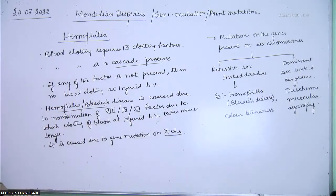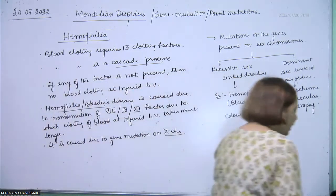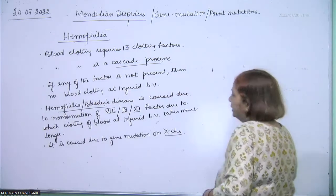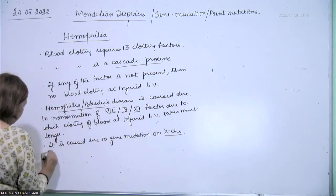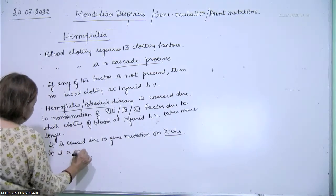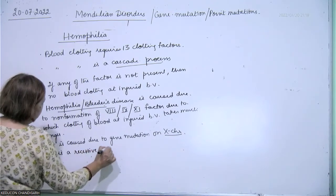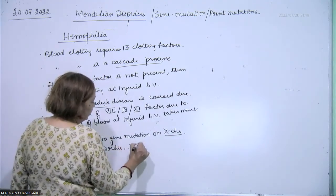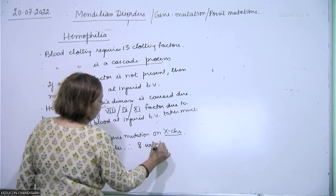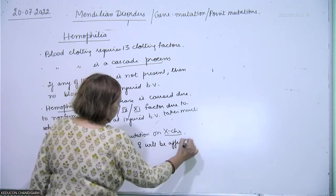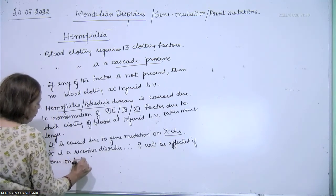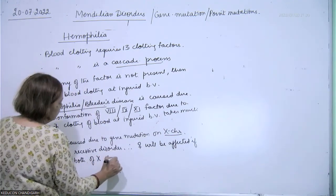The X-chromosome is a sex chromosome. Hemophilia is a recessive disorder. Therefore, a female will be affected if genes on both X-chromosomes are mutated.